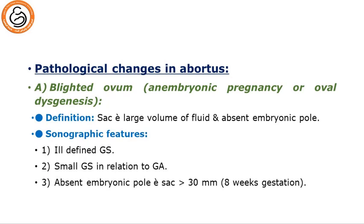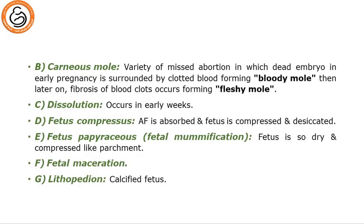Blighted ovum, also called anembryonic pregnancy or agenesis: it is a sac with a large volume of fluid but absent embryonic pole. By ultrasound it will show as a different, ill-defined gestational sac, small gestational sac in relation to gestational age, or absent embryonic pole with a sac measuring more than 30 millimeters at 8 weeks gestation. Carneous mole is a variety of missed abortion in which the dead embryo in early pregnancy is surrounded by clotted blood — called a blood mole — then fibrosis occurs leading to a fleshy mole.